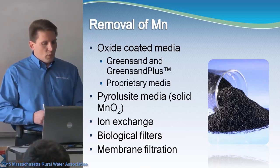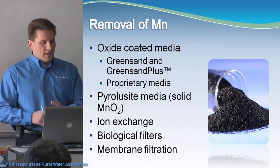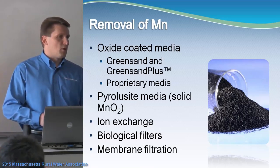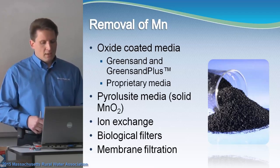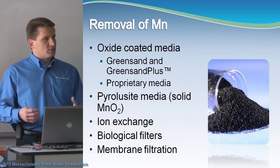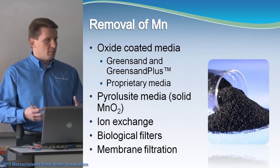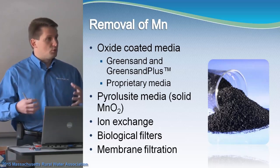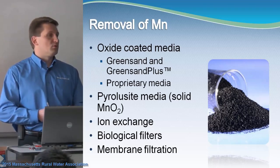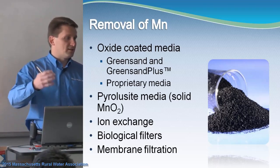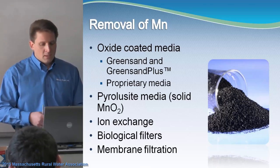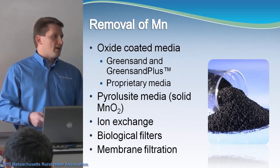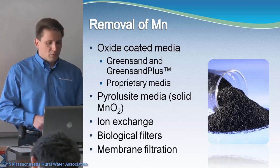Other ways to remove manganese include ion exchange, like a water softener — more for smaller installations. Biological filters are contrary to what we typically do (we try to kill the bugs), but biological filters actually use iron and manganese bacteria to remove iron and manganese prior to sending water to the distribution system. And ultimately there's membrane filtration, which is a much higher-end type of treatment for manganese removal.